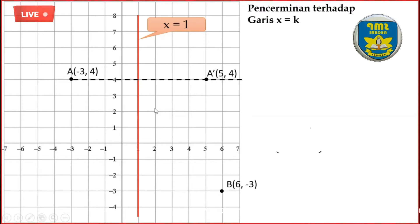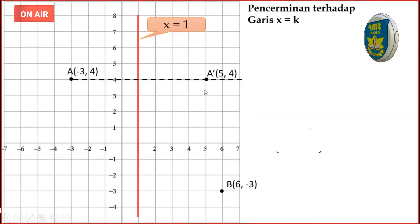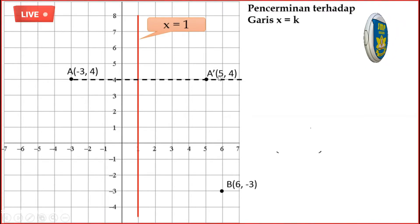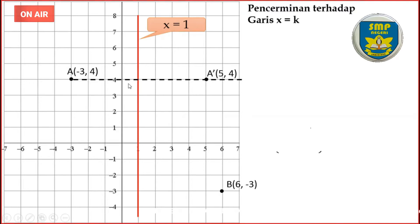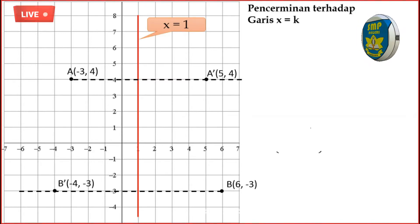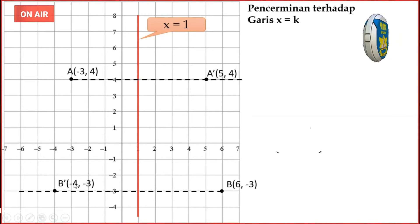Titik A yang semula negatif 3,4 dicerminkan terhadap X sama dengan 1, bayangannya adalah 5,4. Yang berubah adalah X-nya. Negatif 3 berubah menjadi 5. Ingat, jaraknya sama: dari titik A ke cermin sama dengan titik bayangan ke cermin. Berikutnya titik B. Bayangan titik B adalah B aksen, yaitu negatif 4, negatif 3. Y-nya tetap sama-sama negatif 3, tetapi X-nya yang berubah, dari 6 menjadi negatif 4.